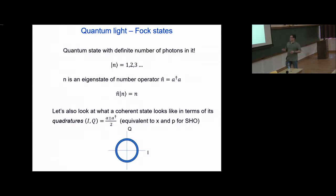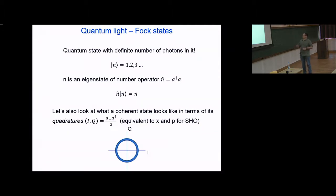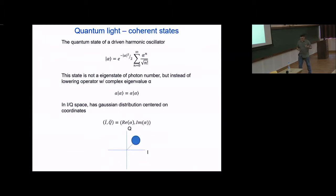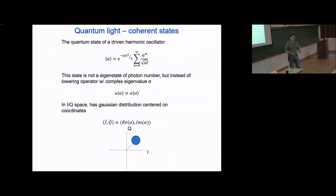A Fock state in IQ space looks like a donut: it starts as a blob at the center for the vacuum state, and becomes a series of concentric rings that get thinner and thinner as they move further from the origin. The most natural description of a harmonic oscillator, at least in terms of its classical analog, is the coherent state — the quantum equivalent of what happens when you have a massive spring system and drive it harmonically at its resonant frequency.